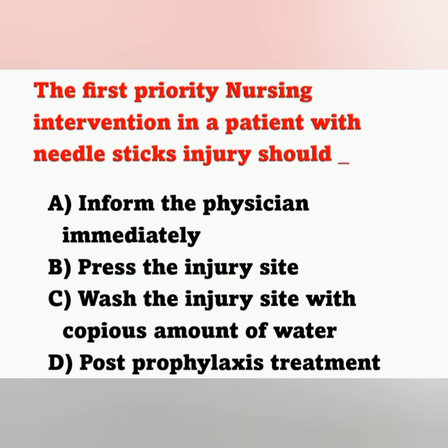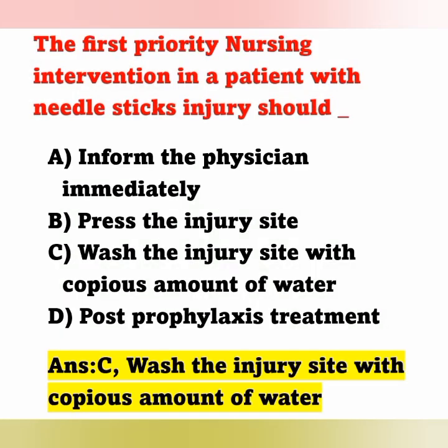Next question: The first priority nursing intervention in a patient with needle stick injury should be? Options: option A inform the physician immediately, option B press the injury site, option C wash the injury site with copious amount of water, option D post-exposure prophylaxis treatment. The correct answer is option C — wash the injury site with copious amount of water. If a nurse gets a needle stick injury, they should stop all other procedures, allow the site to bleed a little, and then wash the injury site with water.